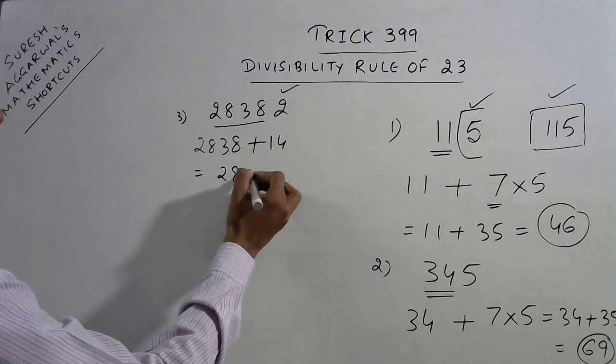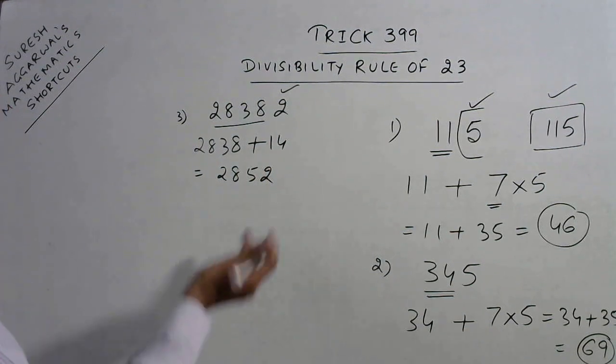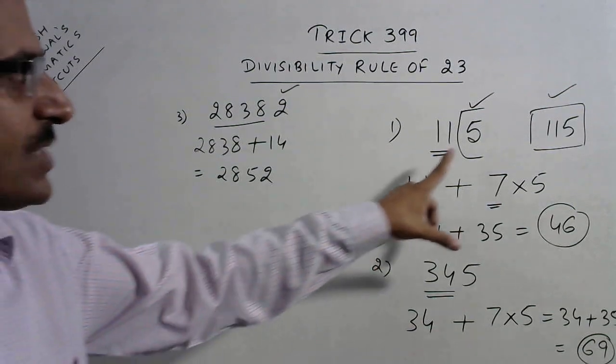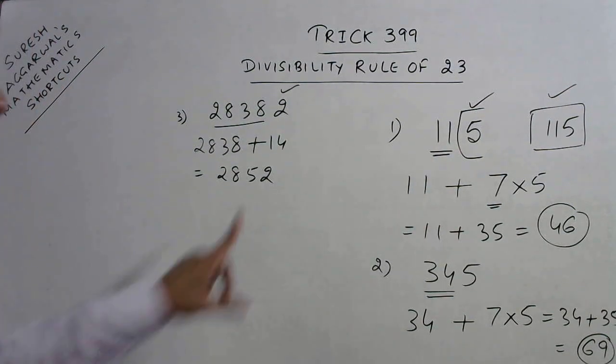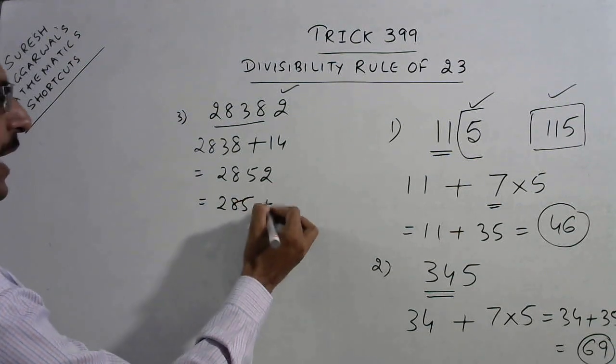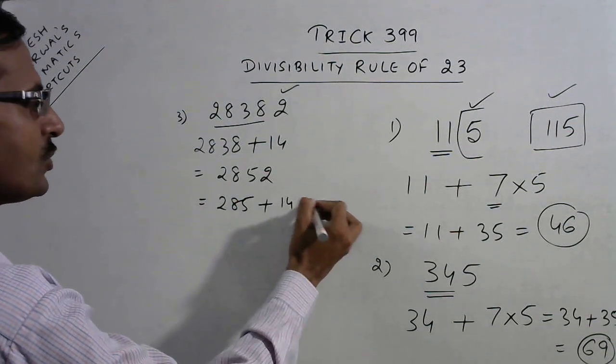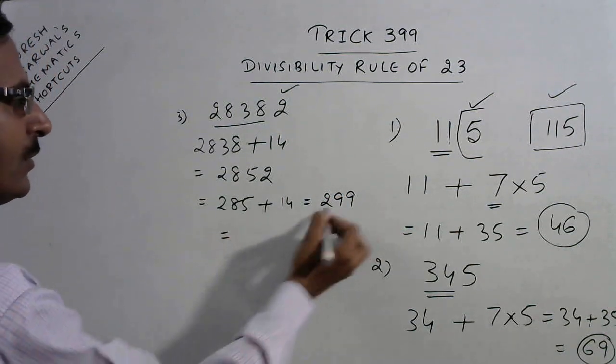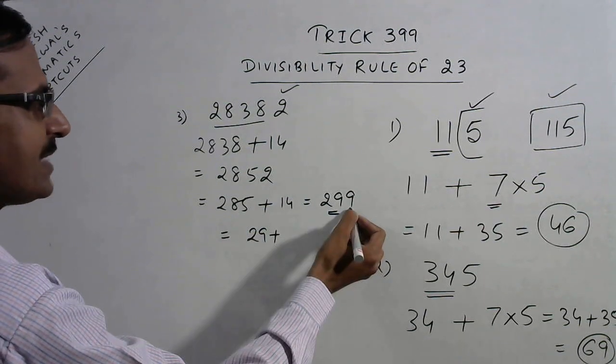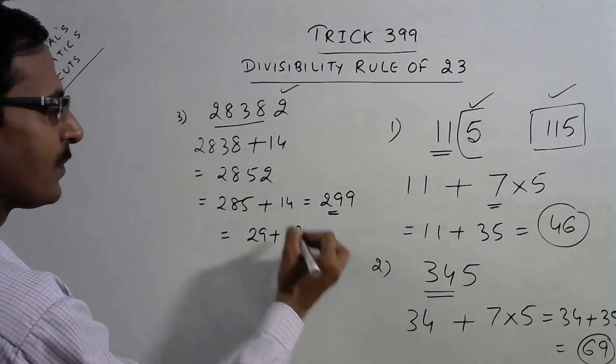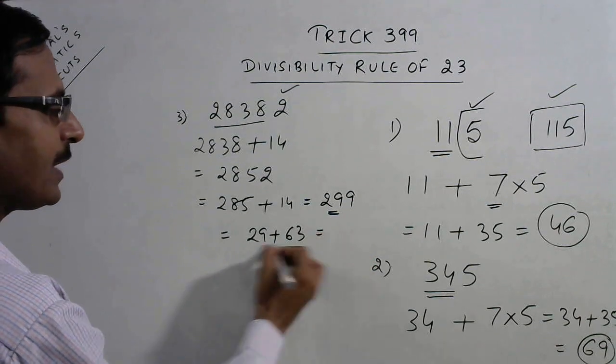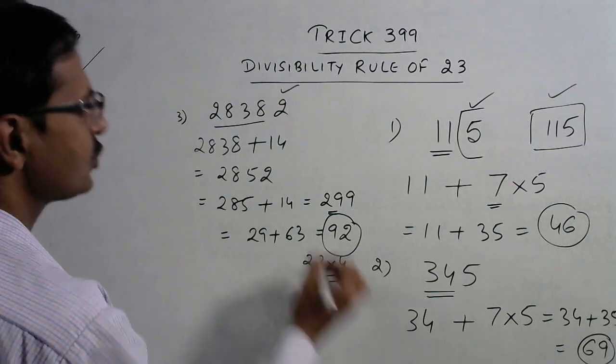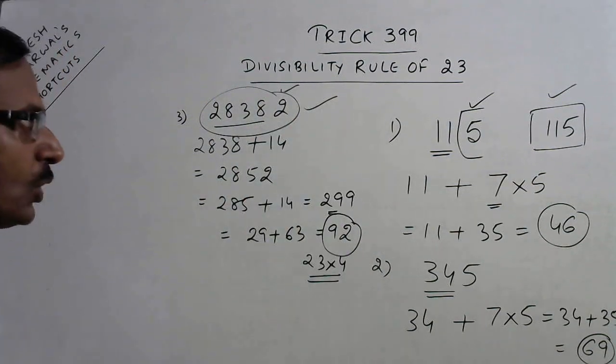Now this comes out to be 2852, and now apply the rule again because this number is quite large. Just as we did here, we can do it again. See here it becomes 285 and add 7 times 2, that is 14. So this becomes 299. Again this is large, so you can again do that. So 29 plus 7 times 9 is 63. So this becomes 92, and clearly 92 is 23 into 4. So the entire number is divisible by 23.